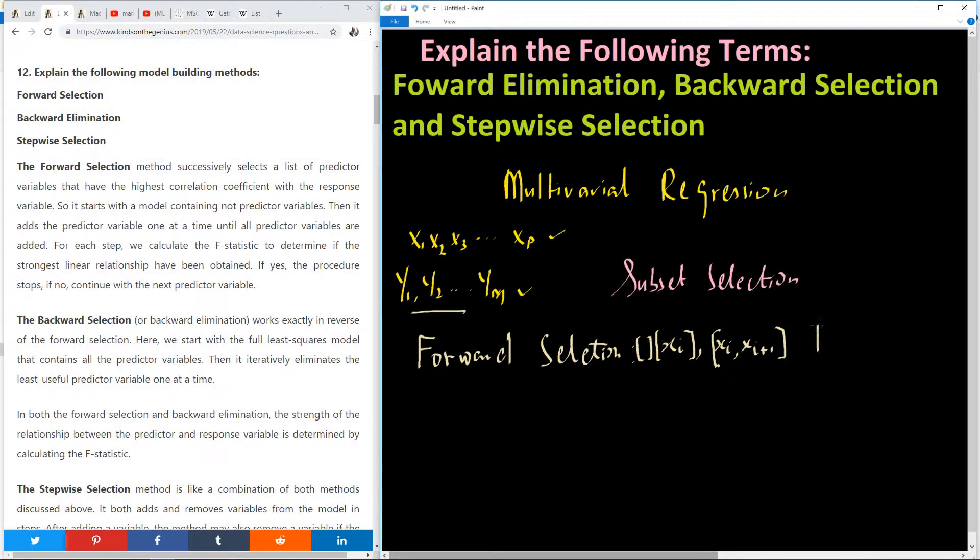For each step, we are going to calculate the f-statistic. So if there is a strong relationship obtained, for each step we calculate the f-statistic. It means if the strongest linear relationship has been obtained, then if yes, the procedure stops. If no, continue to the next predictor variable. So if you add a variable and if you find out that there is no change, you calculate something like f-change. So if no change is obtained, then know that you need not add more predictor variables. So this is about forward selection.